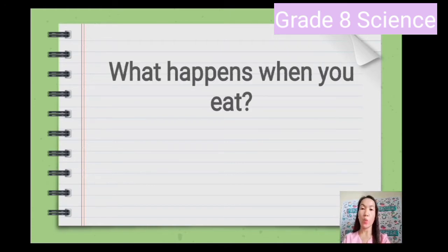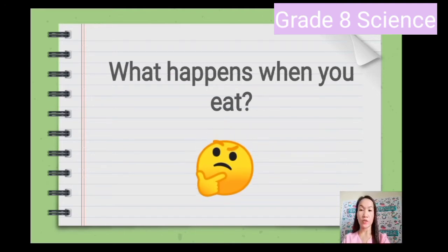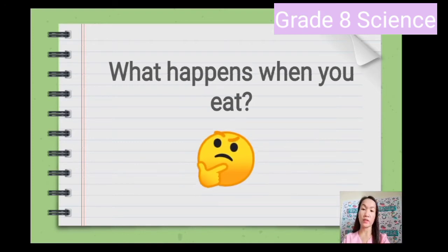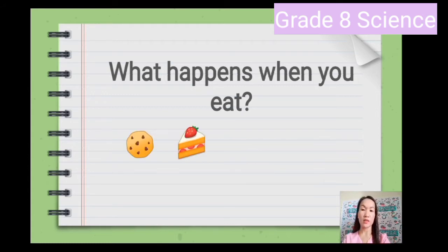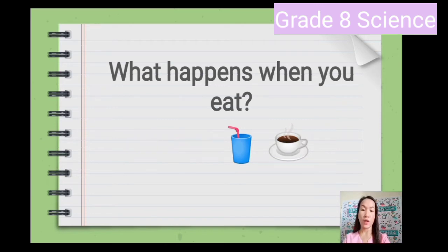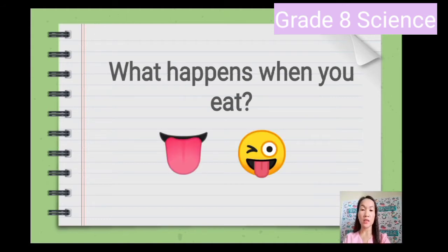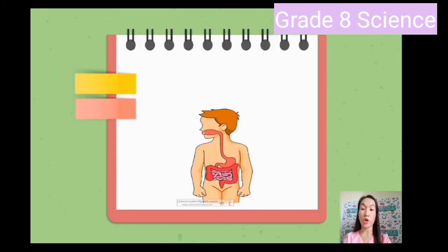Now, what happens when you eat? That's a reasonable question, and certainly one that has gone through the mind of a child more than once. What happens the moment you taste cookies, cakes, milk, tea, or your favorite coffee at Starbucks? From the fact that we have more than 10,000 taste buds in our tongue, tasting is just the beginning of the process. Before we talk about what really happens to the food that we eat, let us first take a look at the different parts of the digestive system.